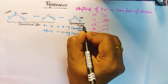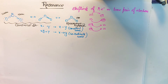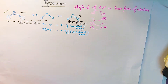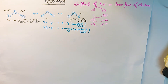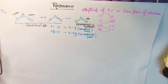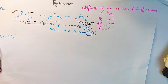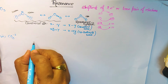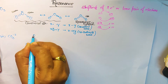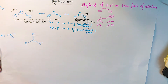The resonance hybrid is the only actual structure — none of the canonical structures is the true structure. Now let's take another example: carbonate ion, CO3²⁻. Drawing its Lewis dot structure gives one double bond to oxygen and two single-bond O⁻ groups.